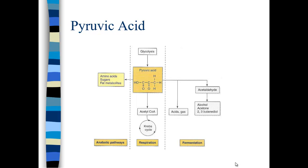Pyruvic acid is a central metabolite that can go in multiple directions. It is the breakdown product of glycolysis. Normally for energetics it will go through respiration. However, it can ferment — industrially producing products like vinegar, propionic acid, alcohol, or acetone. Or it can go into anabolic processes to create amino acids, different sugars, and lipids. We call pyruvic acid a central metabolite because it can go a variety of directions. In the context of respiration, it will go into acetyl-CoA.